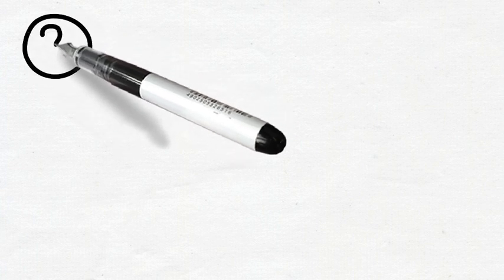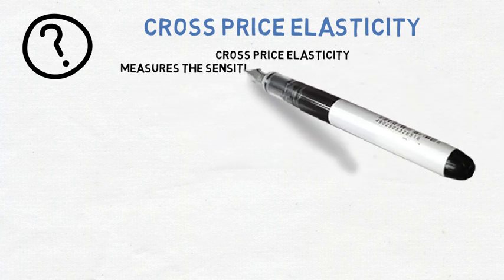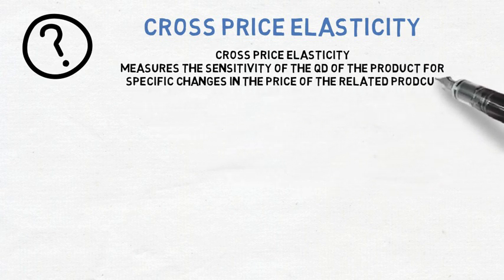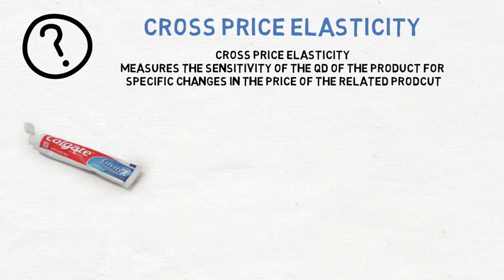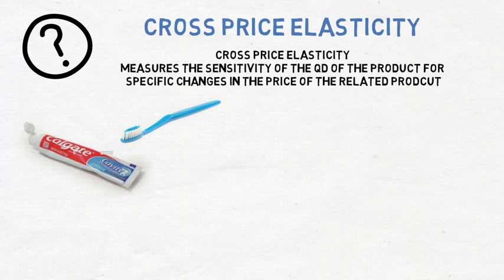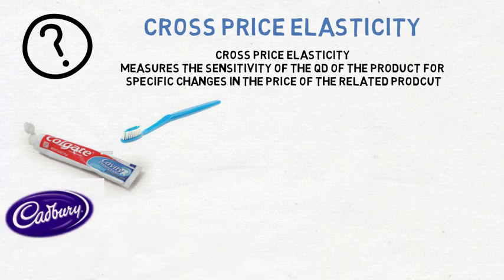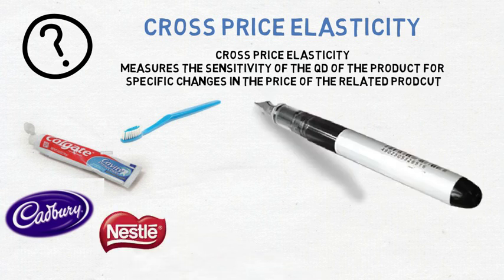Let's first look at cross-price elasticity. Cross-price elasticity measures the sensitivity of the quantity demanded of a product for specific changes in the price of a related product. Certain products are dependent on each other — for instance, a toothbrush and toothpaste are complementary products; the one cannot exist without the other. Cadbury and Nestle are substitute products, therefore the two products provide the same benefits, so if the one gets too expensive, just buy the other one.